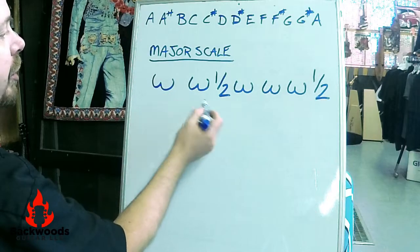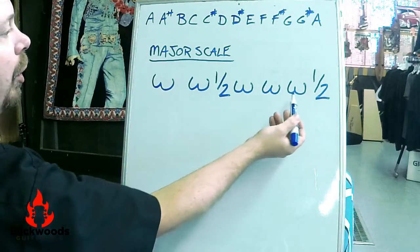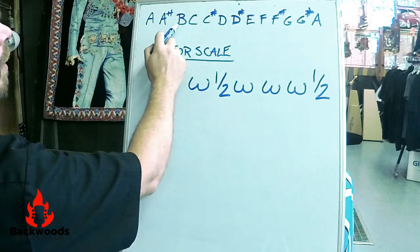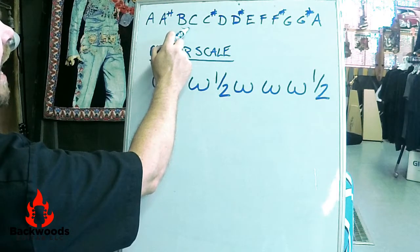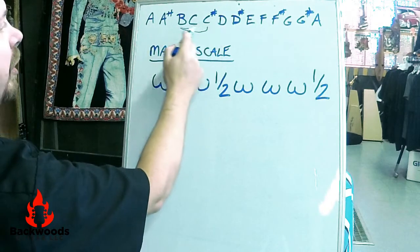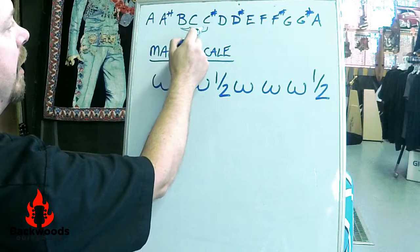Whole step, whole step, half step, whole, whole, whole, half. Okay, for example the distance from B to C would be a half step. Distance from B to C sharp would be a whole step because it's made up of two half steps.